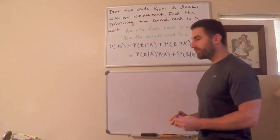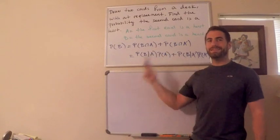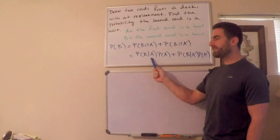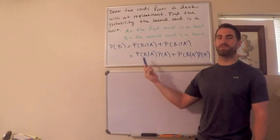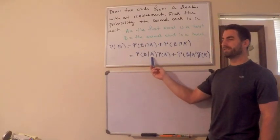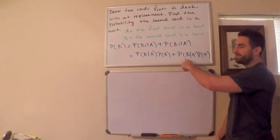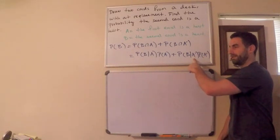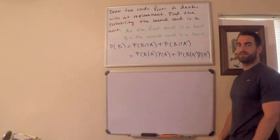Let's go through what this means. I want the probability the second card is a heart given the first card is a heart, because the second card's outcome depends on the first. So I take P(B|A) times P(A), and I add P(B|not-A) — the probability the second card is a heart given the first is not a heart — times P(not-A).